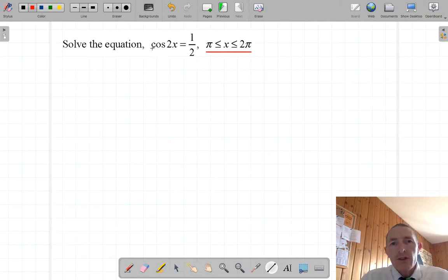But the first thing is, I see a lot of students who see the 2x and they think it's got something to do with double angles, but it hasn't. All I'm going to do to begin with is take away the cosine. So I'm going to take an inverse cosine of both sides.